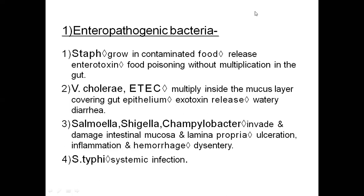The third type is Salmonella, Shigella, and Campylobacter jejuni — enterobacterial species that invade and damage the intestinal mucosa. They colonize in the lamina propria, beneath the epithelial layer, and cause pathogenicity including ulcerations, inflammations, and hemorrhagic dysentery.